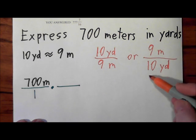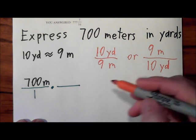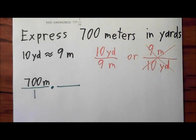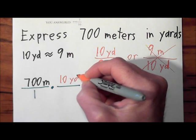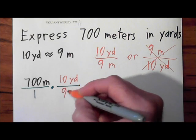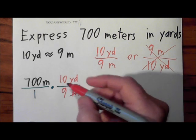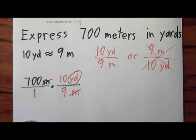We want meters to be on the bottom so the units will cancel. If I select this fraction, this rational expression, I would have yards on the bottom and my units would not cancel. So I don't want this one. I want this one. So if I write 10 yards over 9 meters, then meters cancel and I'm left in yards.